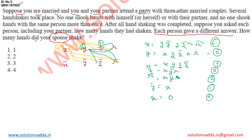So the total handshake counts across all persons are: 0, 1, 2, 3, 4, 5, and 6. When each person is asked how many handshakes they did, all the answers are different: 6, 5, 4, 3, 2, 1, and 0.